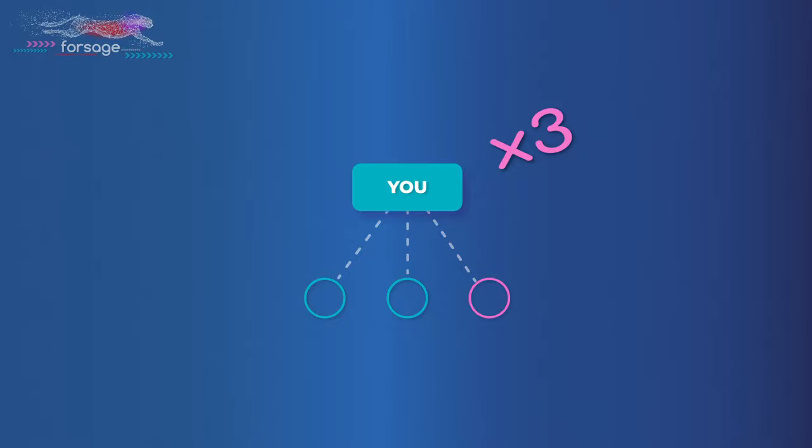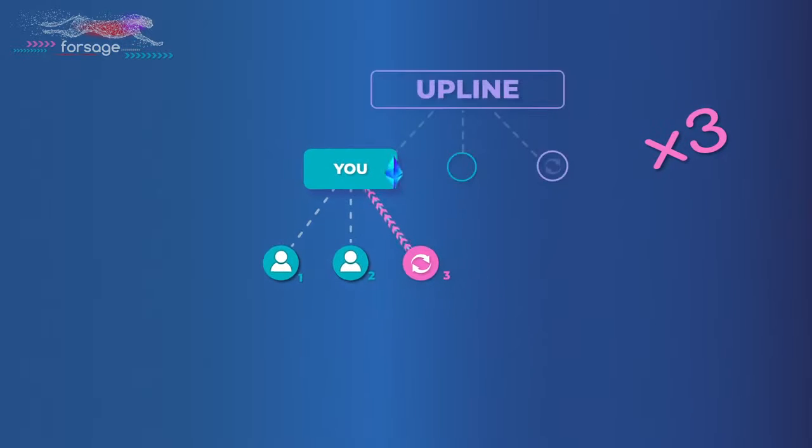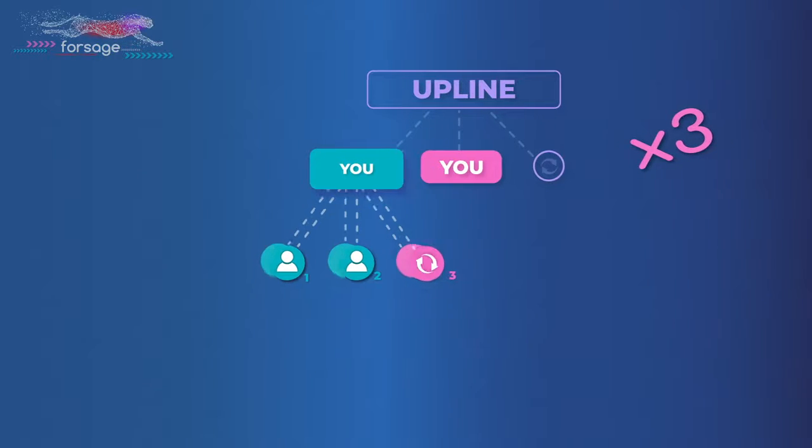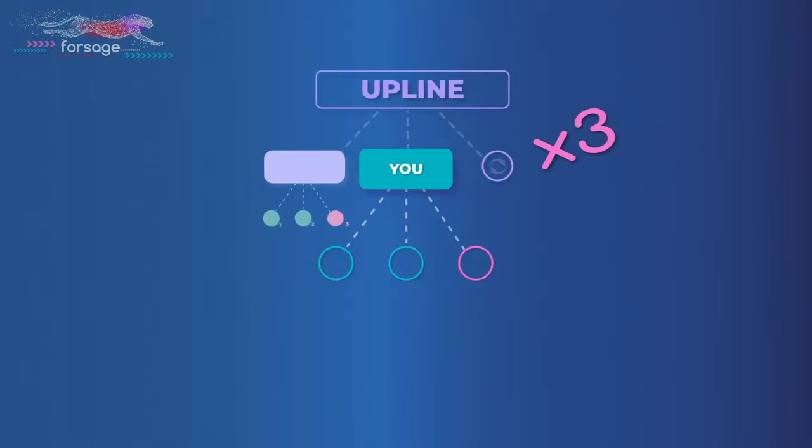The distribution of payment when filling out the matrix automatically occurs as follows. The first partner takes a place below you. 100% payout instantly credited to your personal wallet. The second takes second place below you. Payment also instantly goes to your wallet. And when the third partner takes third place, you again receive 100% income, but in the form of reinvest. Reinvest opens the same slot again, and you continue to receive income from it.